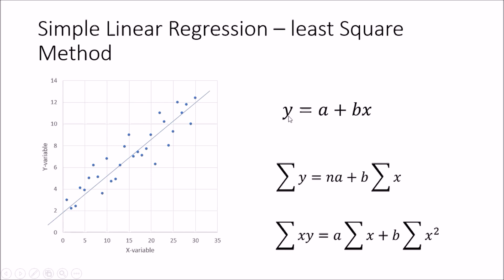Y is the dependent variable, X is the independent variable, A is the intercept — that is the point at which this line cuts the Y-axis — and B is the gradient or the slope of the equation. This is a simple linear equation: Y equals A plus BX.